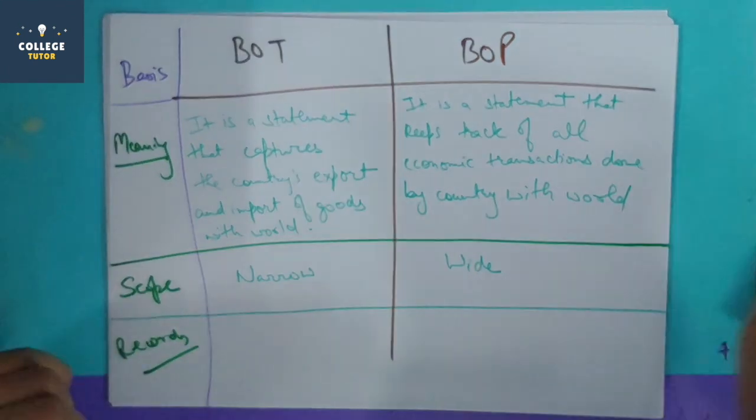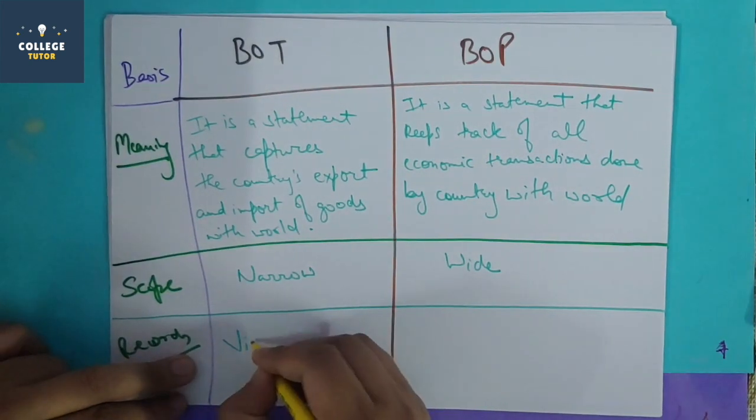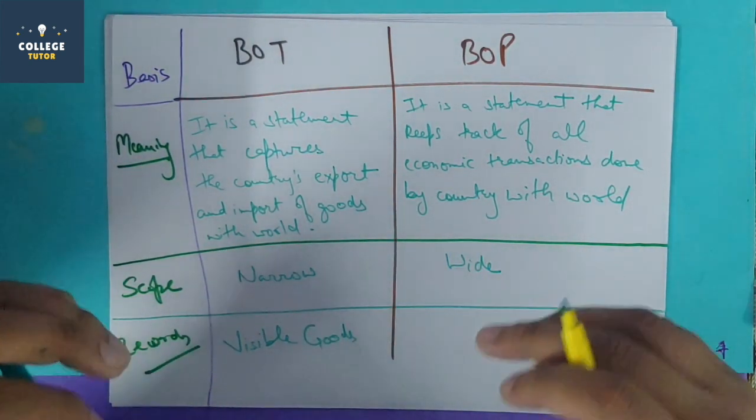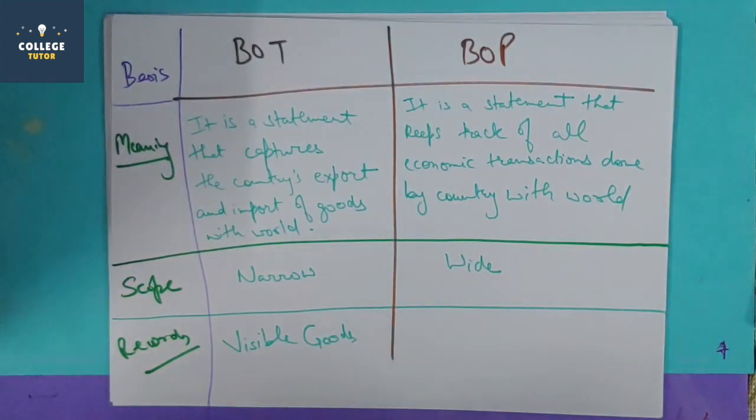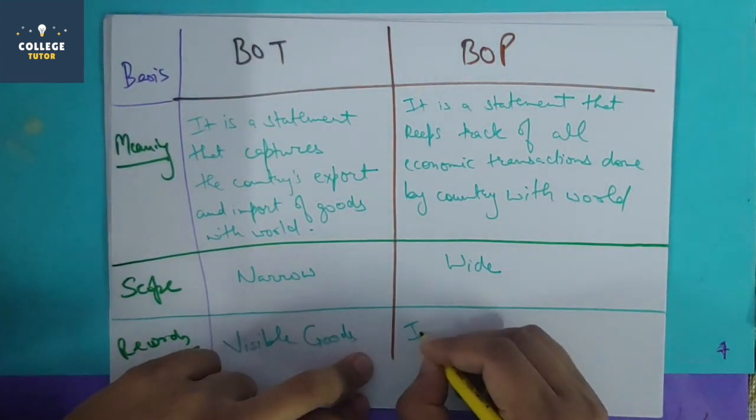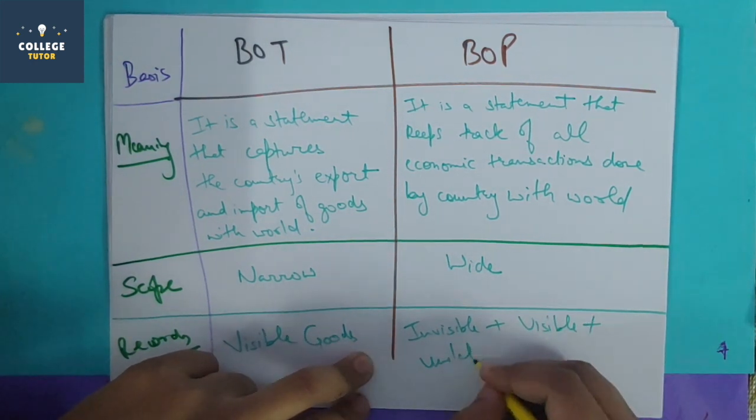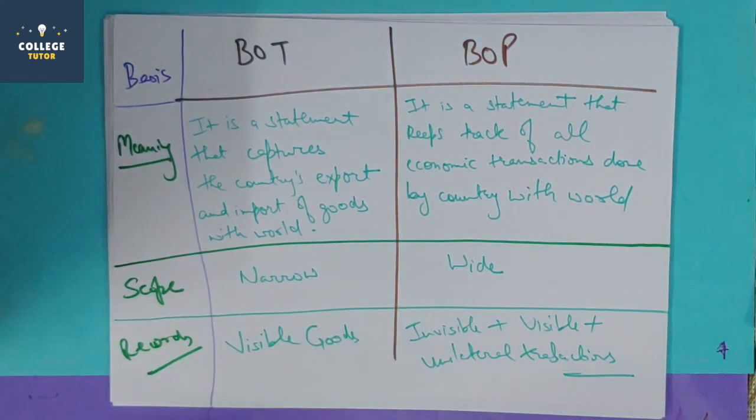Records. In balance of trade, I record visible goods transactions - visible goods which I can see and feel. In balance of payment, I will also do invisible goods, visible goods, and unilateral transactions as I have told you in my last video.